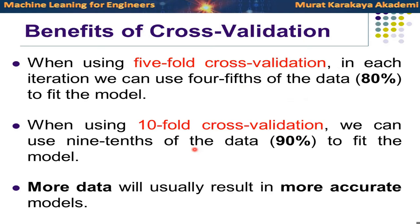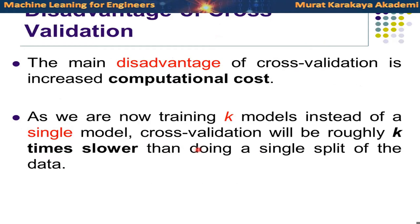Using five-fold cross-validation, we are sure that 80 percent of the data will be in training and 20 percent in the test. Using ten-fold cross-validation, 90 percent of the data will be in the training set. So we use a larger fraction of the data for training, allowing our model to learn much more information with a higher number of training samples. We expect this to result in more accurate models.